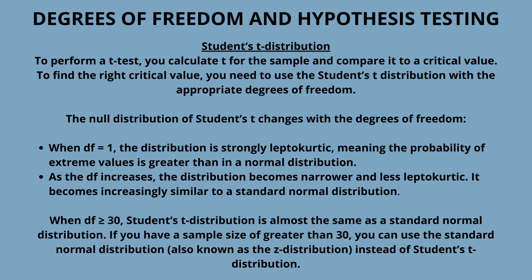Example — degrees of freedom and hypothesis testing: suppose you want to use a one-sample t-test to test the null hypothesis that the mean daily calcium intake of American adults is equal to the recommended amount of 1000 milligrams. You take a random sample of 10 adults and measure their daily calcium intake. The one-sample t-test determines when a population mean is different from a certain value.